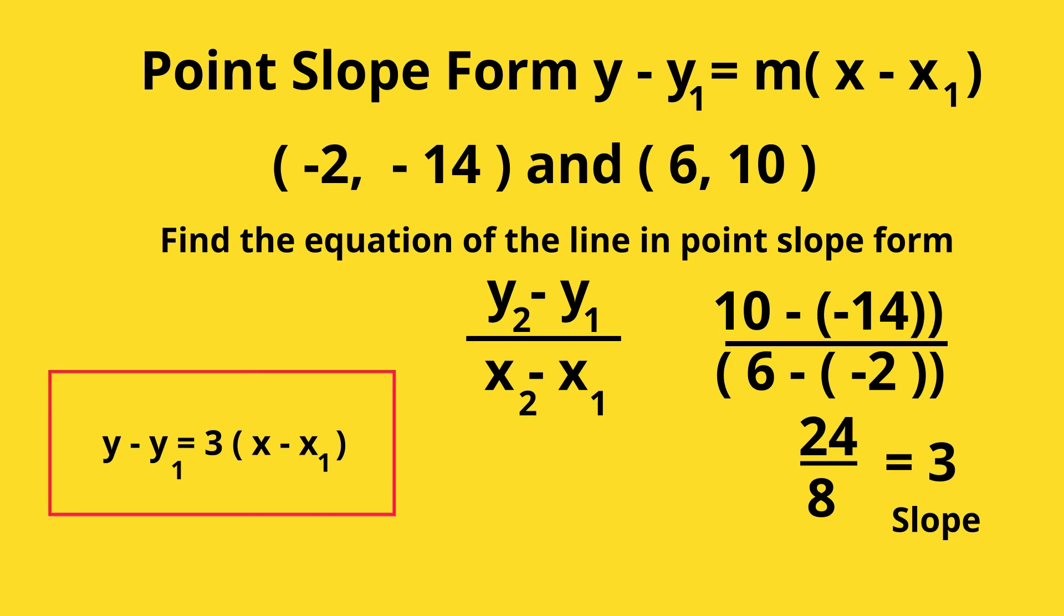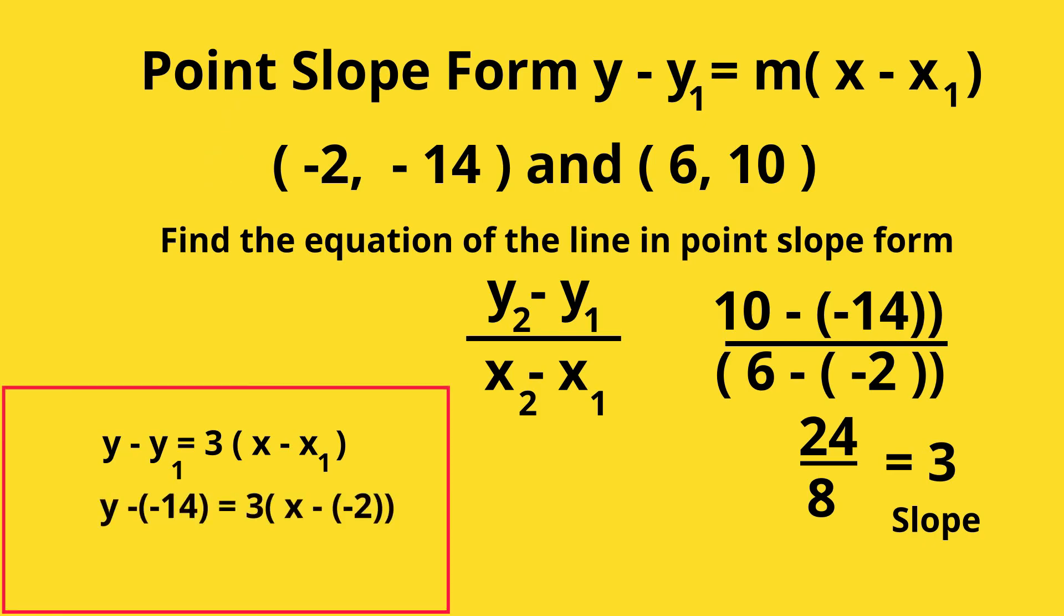Let's go ahead and pick (-2, -14). So it becomes y minus a negative 14 equals 3 times x minus a negative 2, which becomes y plus 14 equals 3 times x plus 2.